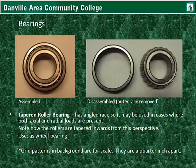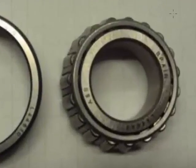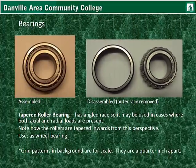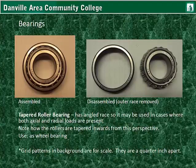Here is a tapered roller bearing. It has an angled race, so it may be used in cases where both axial and radial forces are present. You can see the rollers taper inward towards the top. The use of this type of bearing would be for a wheel bearing on an automobile. These grid patterns shown are for scale; each section is approximately one quarter inch apart.